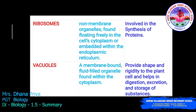The endoplasmic reticulum is of two types: rough endoplasmic reticulum and smooth endoplasmic reticulum. These types are distinguished by the presence of ribosomes on the rough ER. The function of ribosomes is to be involved in the synthesis of proteins.